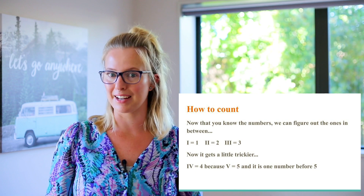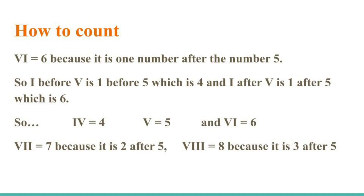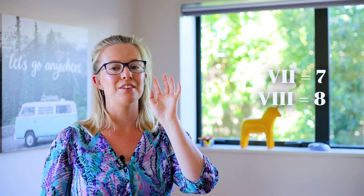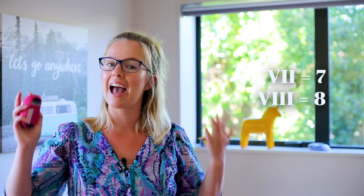Let's look at some of these other numbers. So IV equals four, V equals five, and VI equals six. Then it gets a little bit easier if we're keeping up with this pattern. V with two I's after it is V plus two I's, which equals seven. And then if we have a V with three I's after it, it is V and three I's, which equals eight.